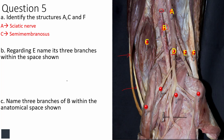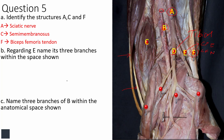Structure F is the tendon of biceps femoris on its way to attach to the head of the fibula. Regarding E: the terminal branches of sciatic nerve — D is the tibial nerve and E is the common peroneal nerve, also known as the common fibular nerve. Either term is correct.